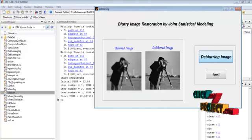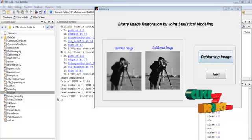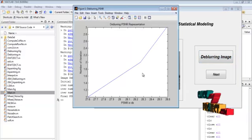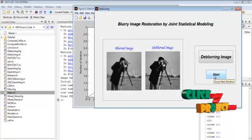This is the blurred image. And here I displayed the deblurred image. This is the PSNR representation for deblurring process. Now by pressing the next button we can move to the inpainting process.